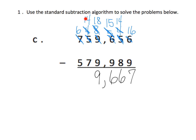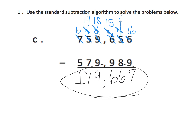I have 14 ten thousands take away 7 ten thousands, so that leaves me with 7 ten thousands. And lastly, I have 6 hundred thousands take away 5 hundred thousands, that leaves me with 1. And so there is our standard algorithm — and what's not so standard for me is the concept of setting everything up first and then just subtracting. I think that's kind of cool.